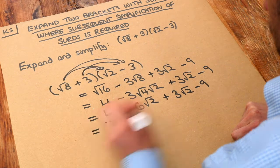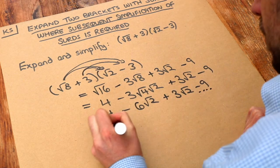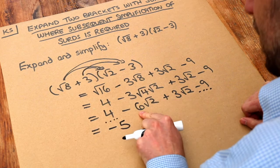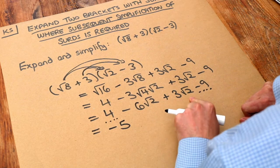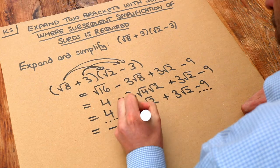Now 4 minus 9 is just minus 5. And then minus 6 lots of root 2 plus 3 lots of root 2 is minus 3 lots of root 2.